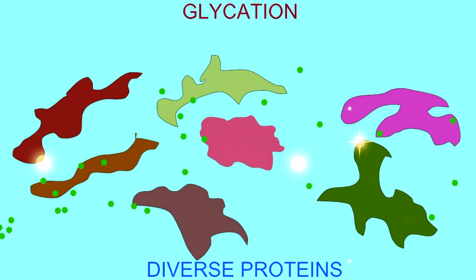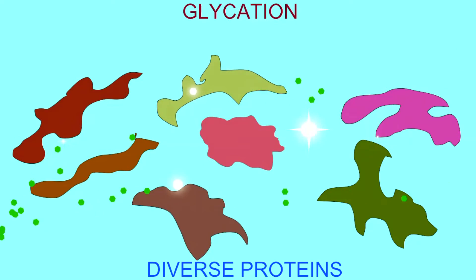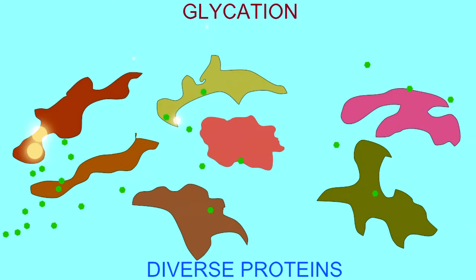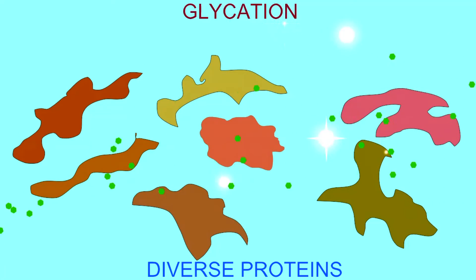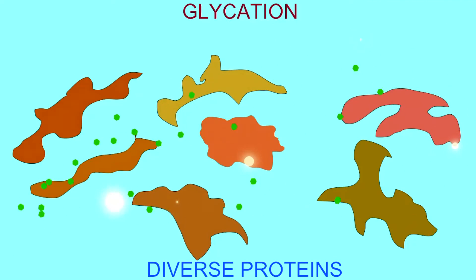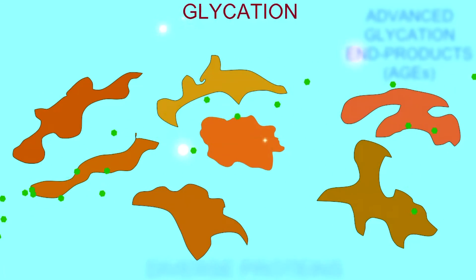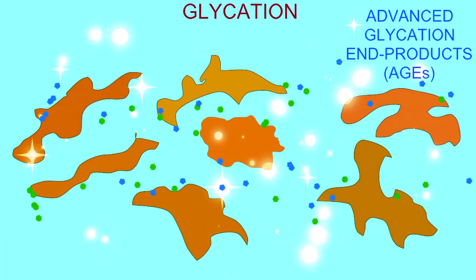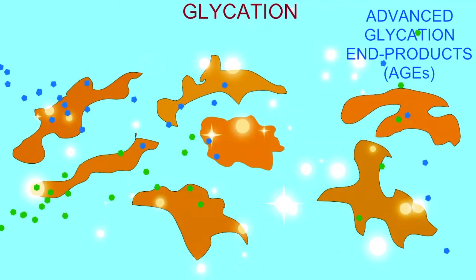Different monosaccharides have different rates of promoting glycation. Glucose is more stable, and its stability and reduced rate of glycation may be the reason that it is the primary cellular fuel as opposed to other monosaccharides. Fructose, for example, can promote glycation at a rate 10 times that of glucose.